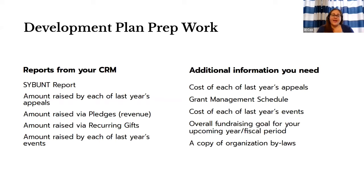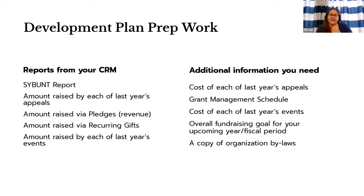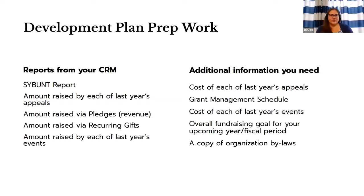By each event last year, you're going to want to break down how much came in and see the costs associated. With last year's appeals, how much did it cost to actually send out the mailing? Some organizations count the time for the writer; if you're outsourcing, that would definitely count. If someone's in-house doing your writing, it's up to you whether you count their time. Some people just count paper, stamps, and a mail house if you're using one. Then there's your grant management schedule if you're doing grants.